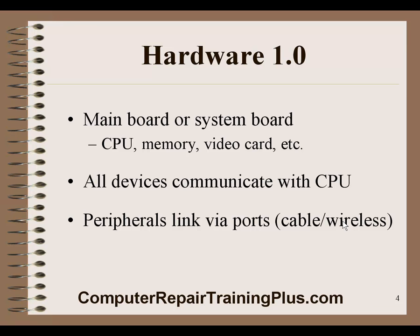The main board — also called the motherboard or system board — holds the CPU, the memory, the video card, and a few other chips. All devices on the motherboard, and external devices connected to the computer, all have to communicate with the CPU. The CPU is the controller for everything. Peripherals link via ports to the case, through cable or wirelessly.